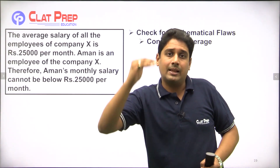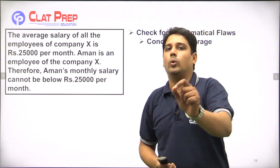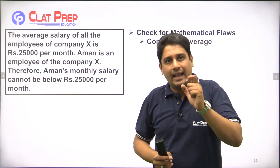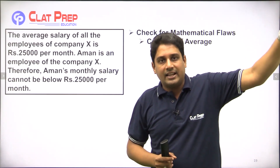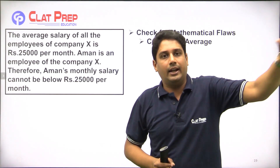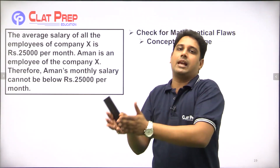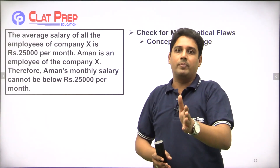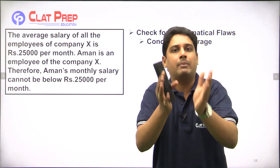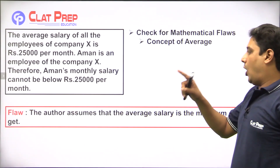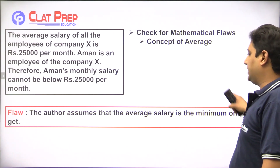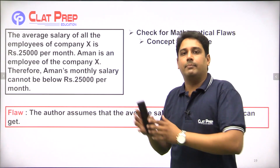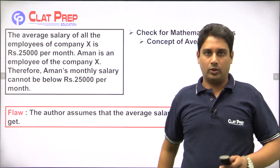That is obviously wrong. Does the average salary mean the minimum one can get? No! Because average salary cannot be treated as the minimum salary. The author assumes that the average salary is the minimum one can get — that is a wrong assumption. That is the flaw in the argument.